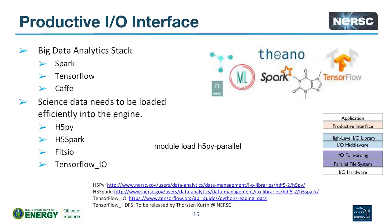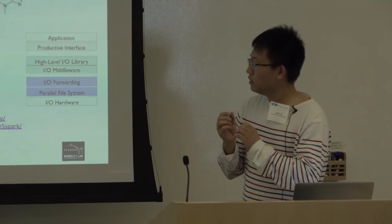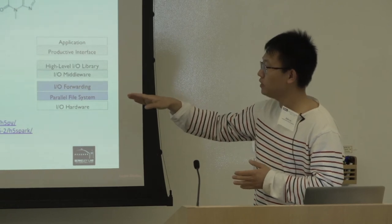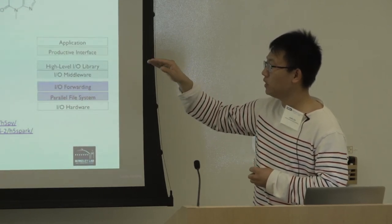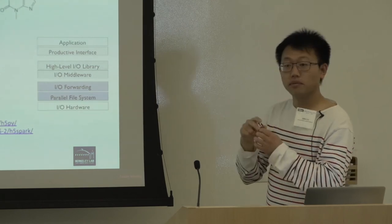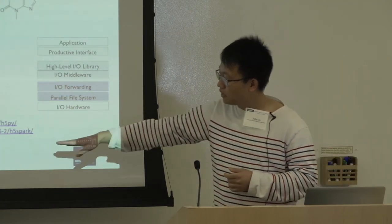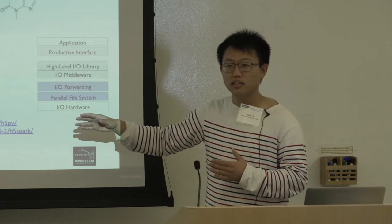Lastly, there are productive interfaces. You may have heard of Spark — a big data framework — and TensorFlow for deep learning applications. For using those kinds of productive software, you have to pay attention to their I/O interface. We provide some recommendations; for example, H5Py is the productive Python-layer interface. Also, TensorFlow I/O — at NERSC we have people working on that and it will be released soon.